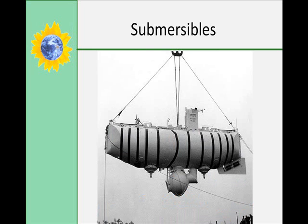Submersibles are small underwater craft used for deep ocean research. They were first used in 1934 by William Beebe, who descended to 923 meters. In 1960, Jacques Picard descended in an untethered submersible, the Trieste, which is pictured here, to 10,900 meters in the Mariana Trench. The pressure down there was 2,221,360 pounds of water per foot, or 1,136 tons of water per foot — quite heavy.